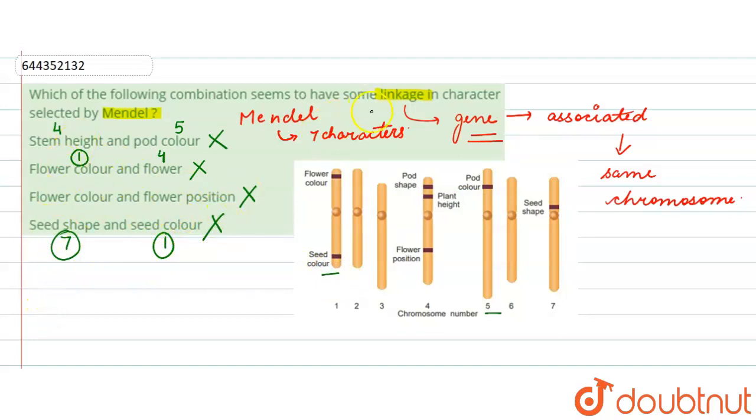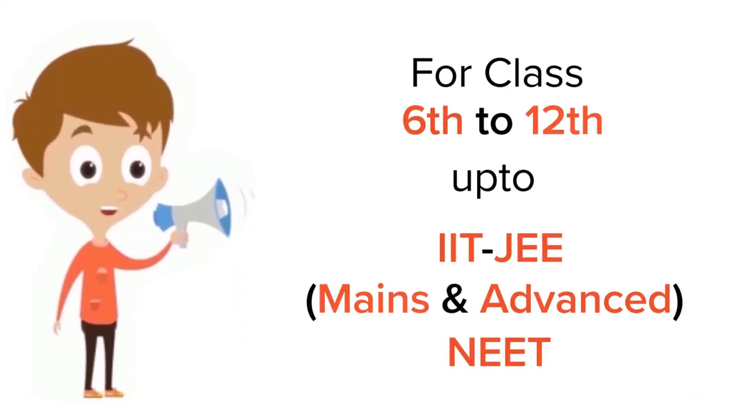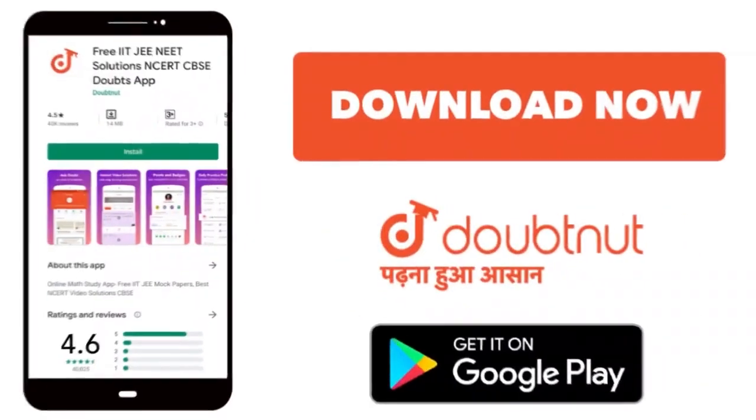In the given options, there won't be any linkage in the characters. Thank you! For class 6-12, IIT, JEE, and NEET level, trusted by more than 5 crore students. Download DoubtNet today.